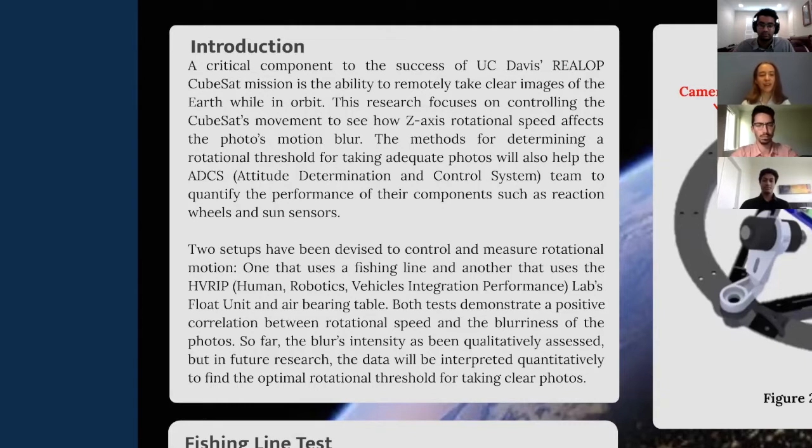This way, when our satellite is in space, it will only take pictures that have minimal motion blur. To do this, we came up with two setups that basically record the rotational data of a spinning camera as the camera is taking pictures. Both methods involve some kind of rotating platform that the camera sits on as it's taking the photos.